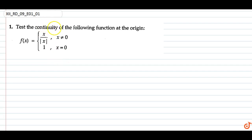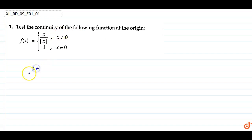From this question we have to test the continuity of the following function. f(x) is given as x upon mod x when x is not equal to 0, and f(0) = 0. For a continuous function, the limit as x tends to 0 of f(x) should be equal to f(0).